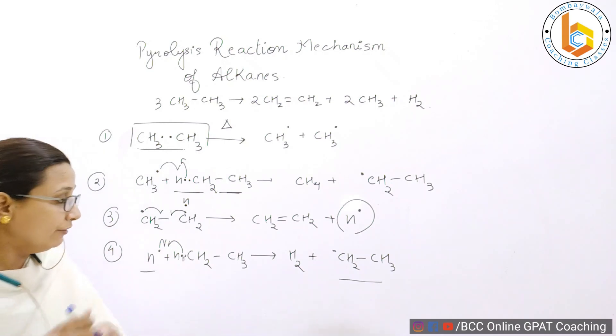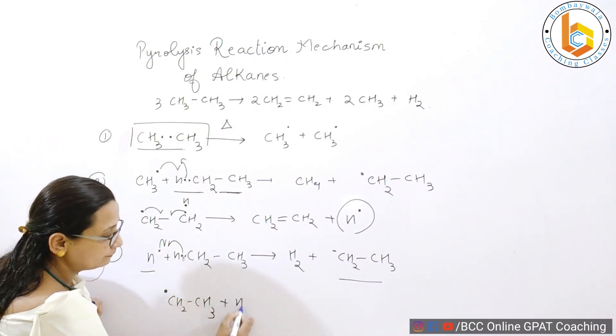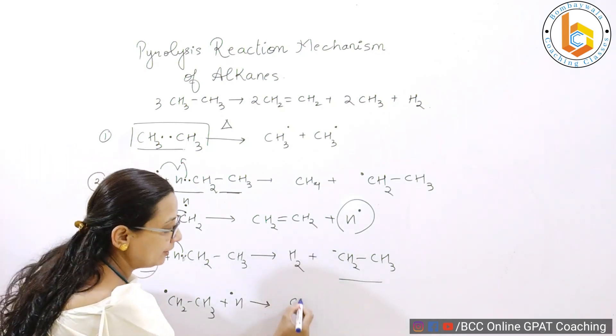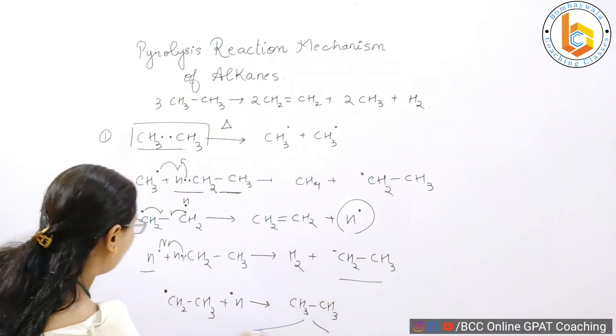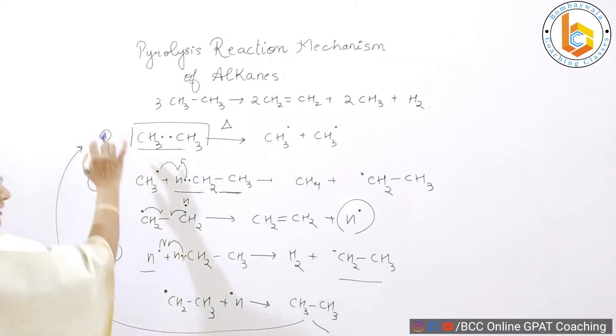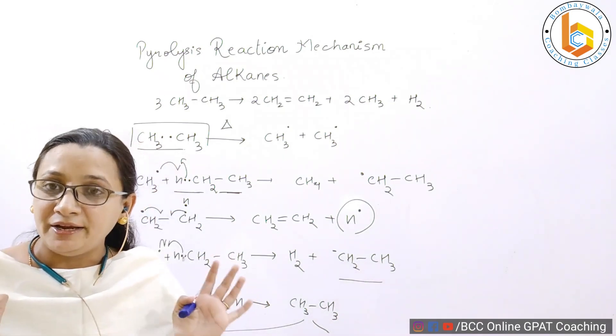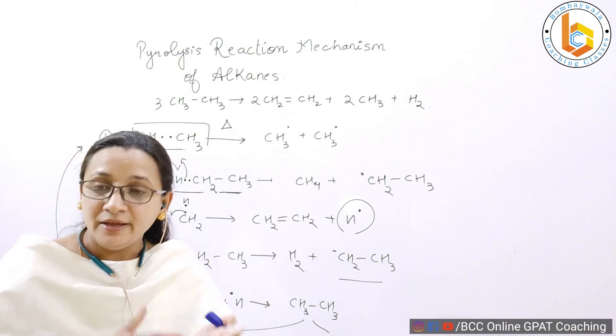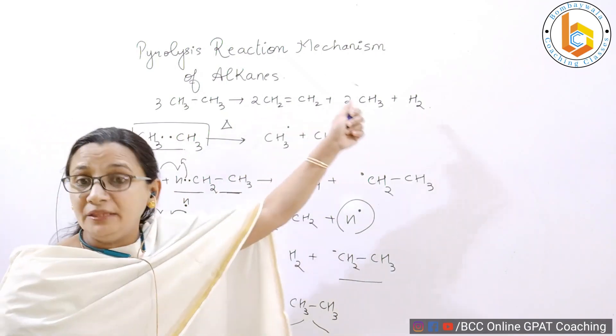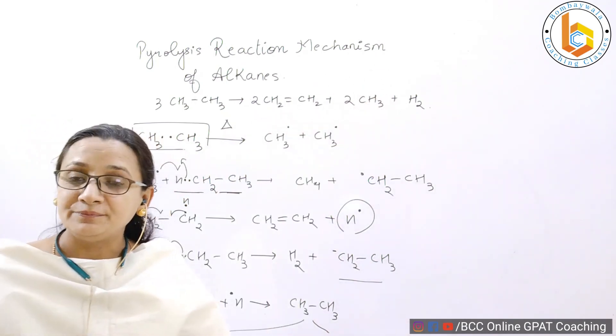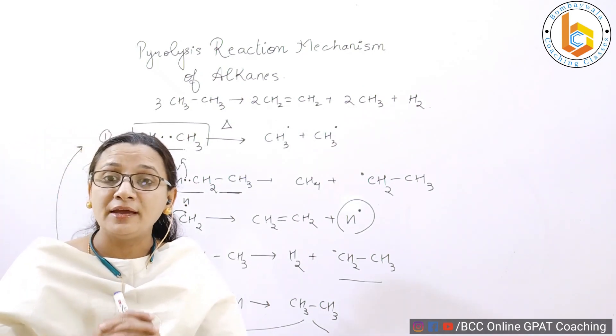And there will be a time that will come when this CH2 CH3 free radical will combine with this H free radical to become ethane. Now, if it is ethane, then again this ethane will show the reaction once again. And this reaction keeps on continuing till nothing is left behind. And all the ethane is being broken down into either ethene, methane or hydrogen gas is liberated. This is what is called as pyrolysis and this is how the mechanism proceeds.